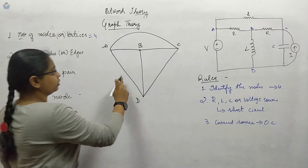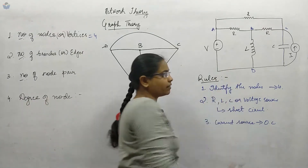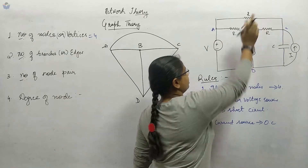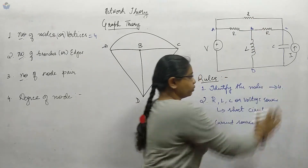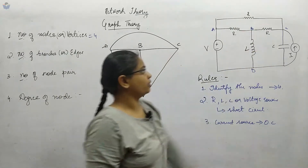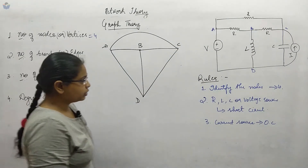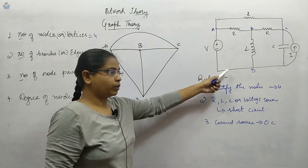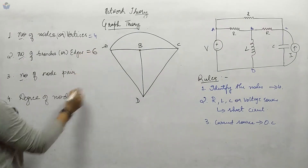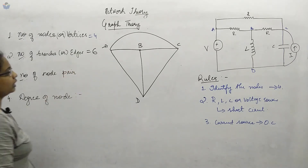So this is the graph we obtained from the circuit. Counting the branches: there are 6 branches in the graph, but in the original circuit there are 7 branches — the 7th being the current source. The number of branches in the graph will be equal to or less than that in the main circuit. In the terminology, number of branches is also called edges — here it is 6.